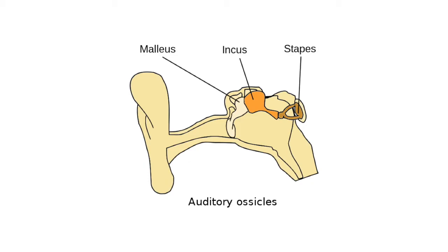When it comes to our three auditory ossicles, keep in mind which is closest to the tympanic membrane — that's going to be your malleus, because it's actually a landmark we'll look out for when examining the eardrum. And then our stapes is actually closest to our cochlea.